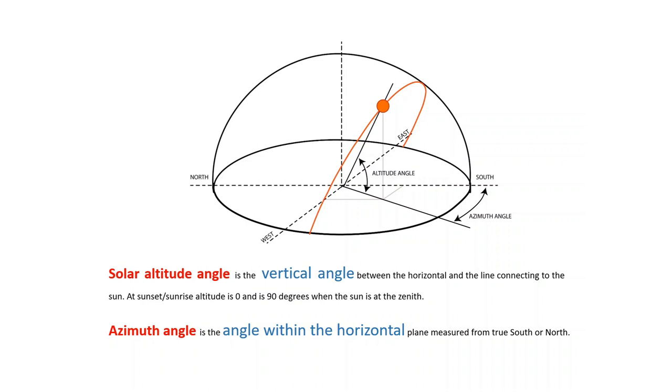Azimuth angle is the angle within the horizontal plane measured from true south or north. With these two angles, we can locate the position of the sun at any point of time. Azimuth angle gives the location of the sun based on how it is tilted from the north or south, and altitude angle gives the vertical angle with which the sun is tilted from the horizontal plane.